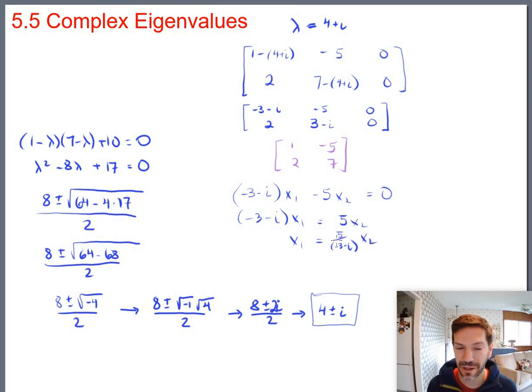And division by a complex number can be simplified. And we'll do that in a second. But let's just finish out the eigenvector here first. So x2 is the free variable. So there's our solution for the augmented equation. And the eigenvector is any multiple of 5 over negative 3 minus i, 1. Any multiple of that.